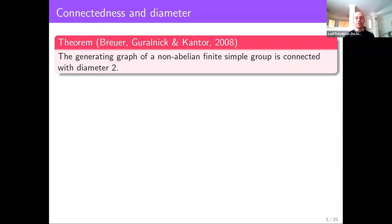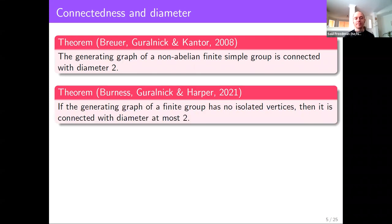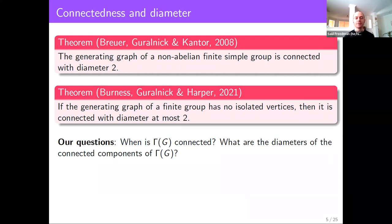Connectedness and diameter are the properties of γ(G) I'll be studying. One of the most well-known results in graphs defined on groups, from 2008 proved by Breyer, Garantic, and Cantor, states that the generating graph of any non-abelian finite simple group is connected with diameter 2. This was generalized further just last year by Tim Burness, Rob Garnick, and Scott Harper: they proved that if the generating graph of any finite group has no isolated vertices, then it is always connected with diameter at most 2. These lead us to ask when is γ(G) connected, and what are the diameters of its connected components.